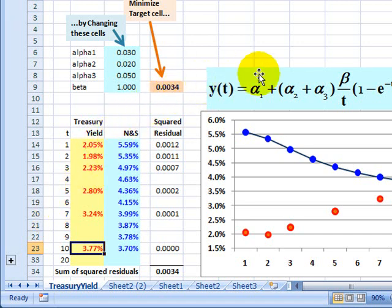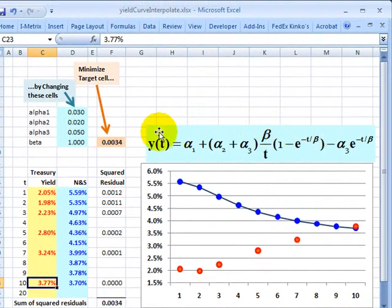And if I go up here and we look at this function here, I'm not going to get into the details of this function. This is a very common, and as functions go simple, to describe the term structure. This is the Nelson and Siegel model.